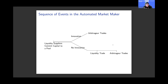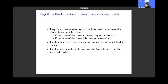In a limit order market versus an automated market maker, the total gains from trade are split differently among market participants. Liquidity providers face adverse selection in the AMM because they've put in passive liquidity. However, the bonding curve attenuates the amount the arbitrageur wants to trade because larger quantities have bigger price impact, naturally restricting arbitrageur trading.